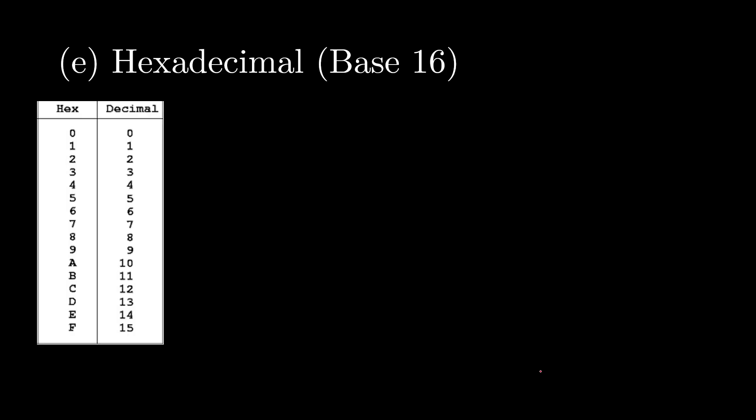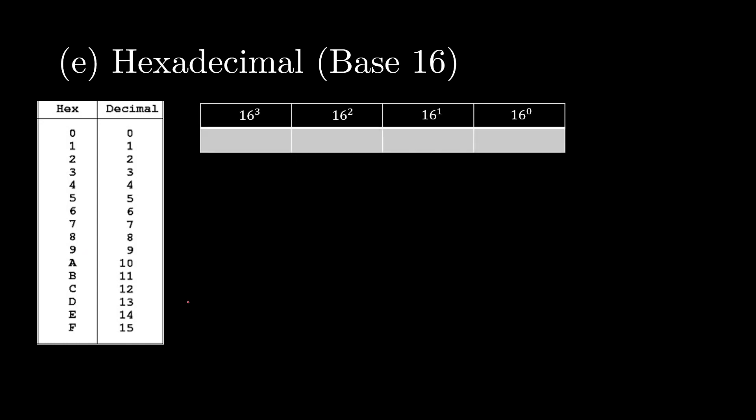Now onto hexadecimal, which is base 16. And hexadecimal is the same as denary in that we represent 0 through 9 with the normal 0 through 9 numbers. But in hexadecimal, we represent 10 through 15 with 6 letters, A through F. And just like how binary was in powers of 2, hexadecimal is in powers of 16.